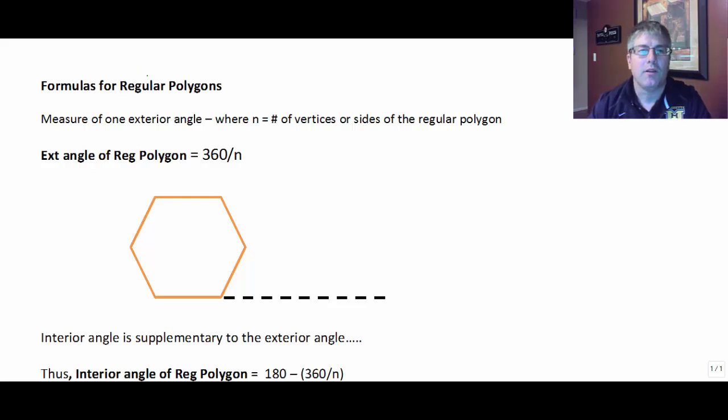So let's take a look at some formulas for regular polygons. Our first one is the measure of the exterior angle of a regular polygon is 360 divided by n, where n is the number of vertices or sides of that regular polygon.